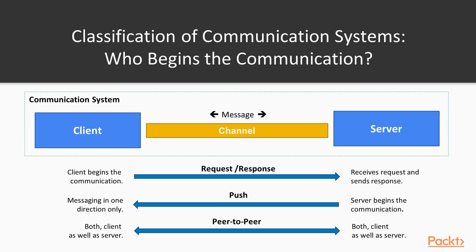Another form of classification is who begins the communication. First is request-response — the most classical form of synchronous communication, where the client begins, the server receives and processes the request, sends the response back, and the client waits. You can also have push communication, where the server begins and pushes notifications to the client. And as a special form, there is peer-to-peer where sender and receiver roles intermittently change.